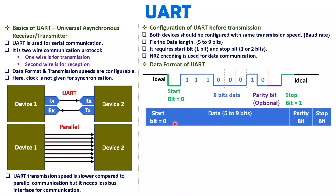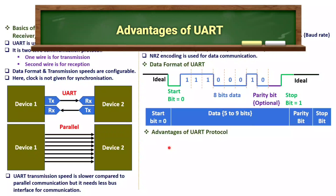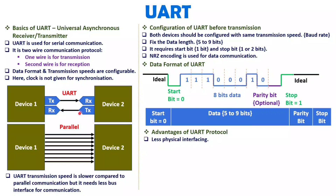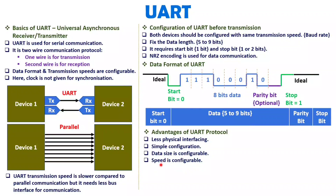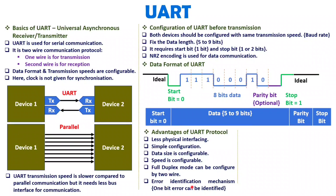The advantages of UART include less physical interfacing since communication uses only two lines, simple configuration, and configurable data size and speed. The most common baud rate is 9600, though other baud rates are also available. Full duplex communication is possible using the two-wire setup. An additional advantage is the optional parity bit, which can be used for error identification.